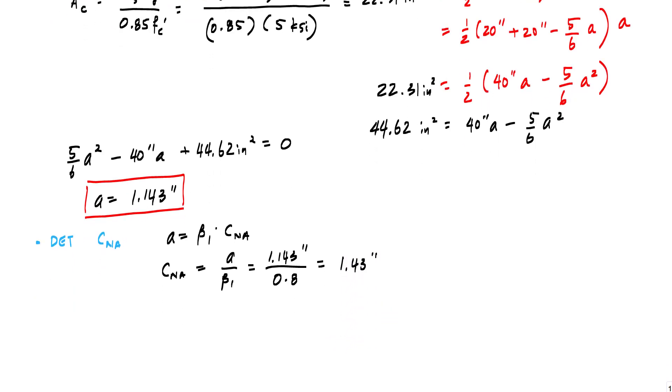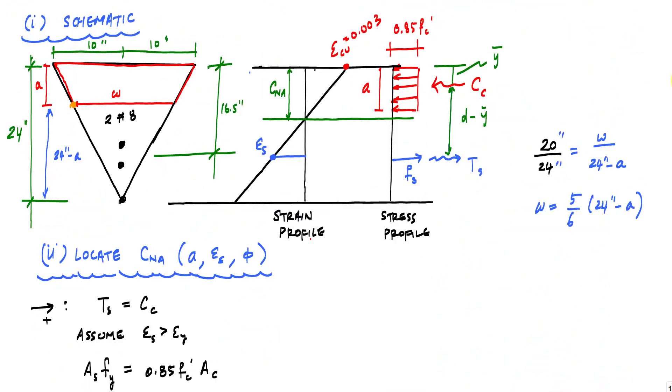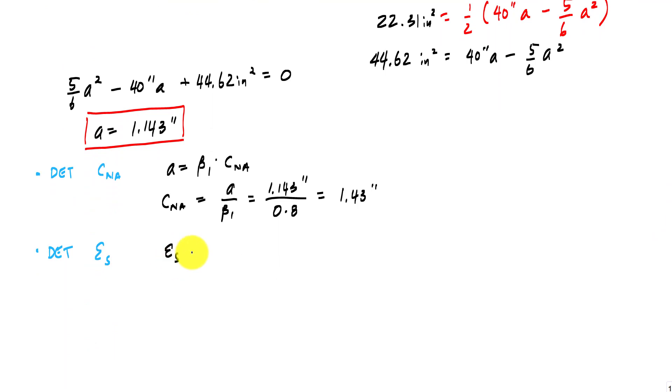And now using this depth A, I can also calculate CNA. And that is really just from knowing that A is beta 1 times CNA. And CNA is A over beta 1, which is 1.143 inches. And beta 1 for 5 KSI concrete is 0.8. And this would be 1.43 inches. And once I have CNA, I can go ahead and use that to calculate the strain in the steel from similar triangles. So if I just go back to the strain profile, I know this distance right here is D minus CNA. And so from similar triangles, this is epsilon S is D minus CNA over CNA times 0.003. And if I plug and chug, we get 0.032.